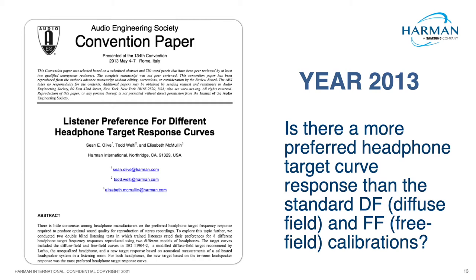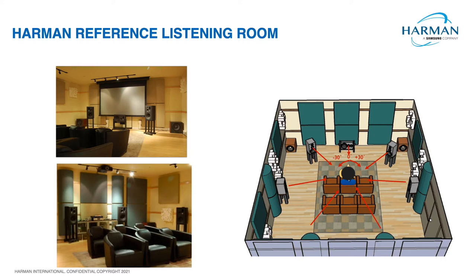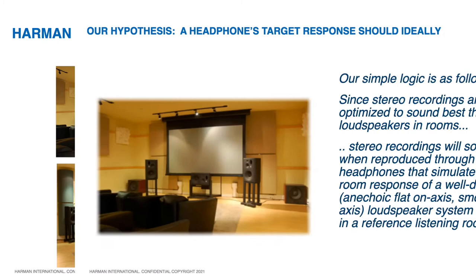In 2013, instead of just measuring and listening to random headphones, we decided to take headphones and equalize them to different targets. This allowed us to directly compare the diffuse field standard and the free field standard — which at that time people were supposed to be designing their headphones to. We thought the diffuse field standard didn't make sense because people don't listen to music in diffuse rooms. In a typical listening room you have a strong direct component, some strong early reflections, but not a lot of late reflected sound because of absorption and loudspeaker directivity.